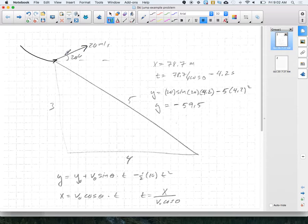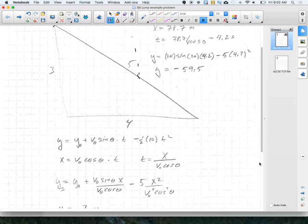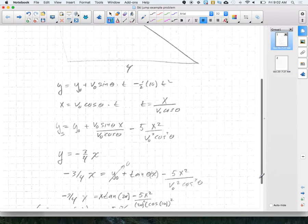So the question becomes, where does he or she land? Like any of these problems we've done so far, the first step is to write position of the skier as a function of time in the x direction and position of the skier as a function of time in the y direction.